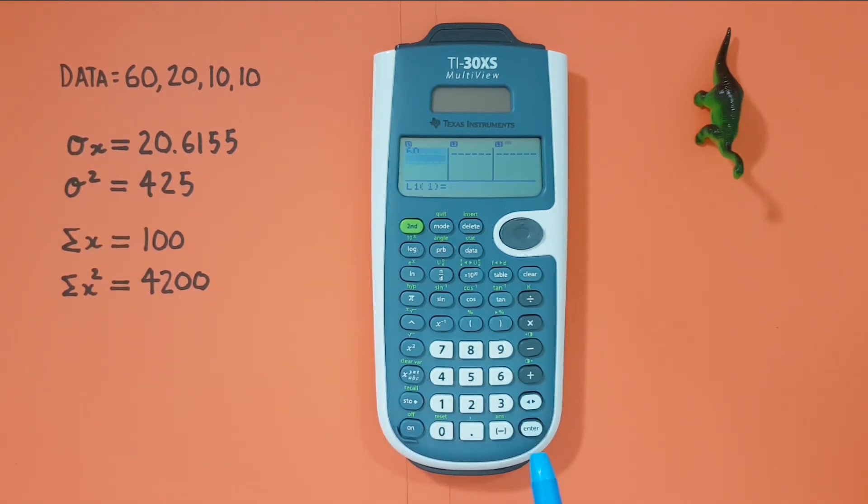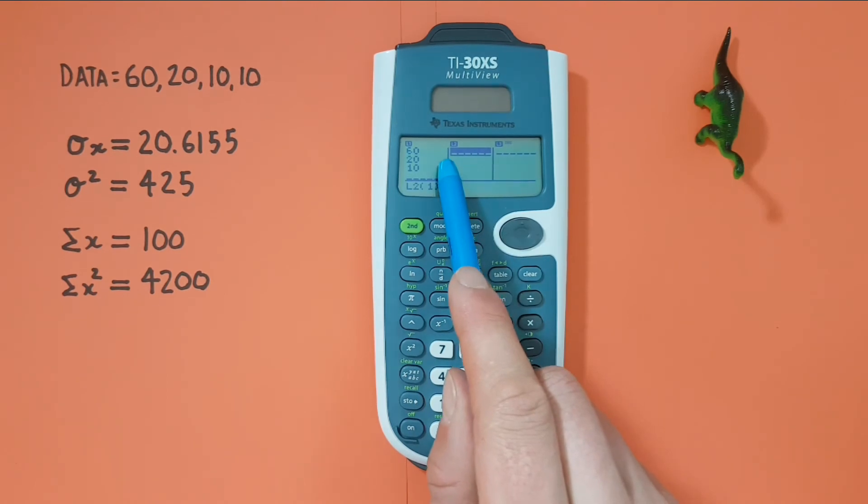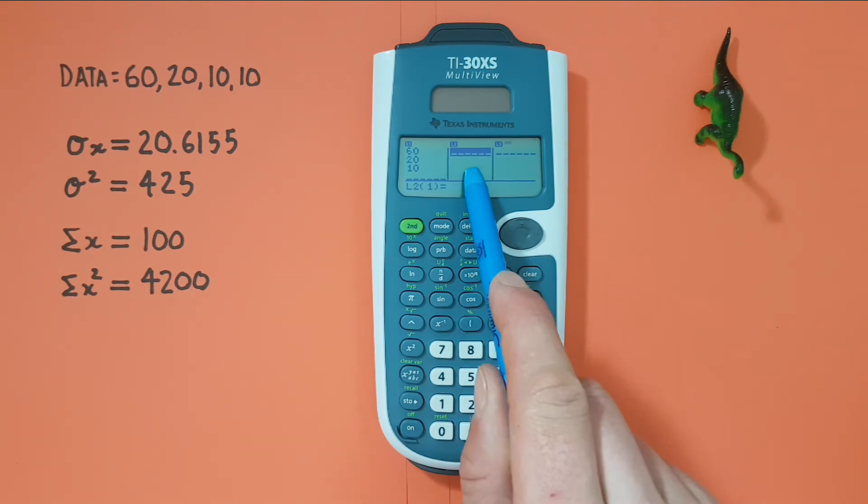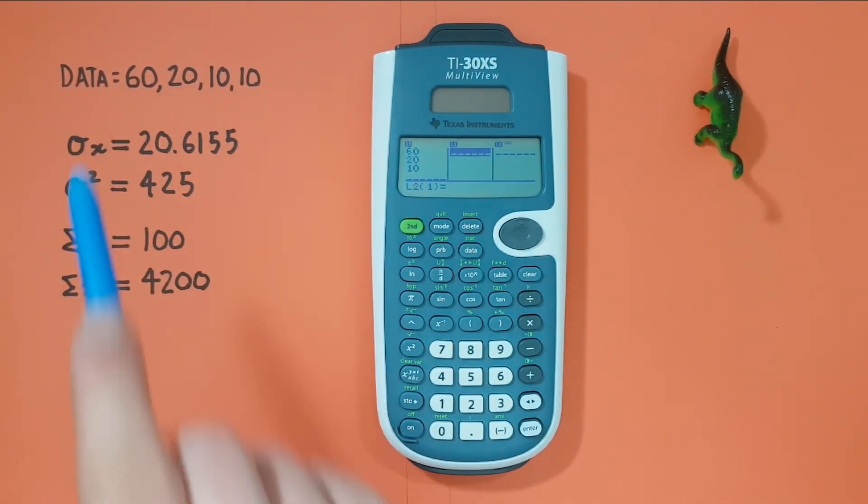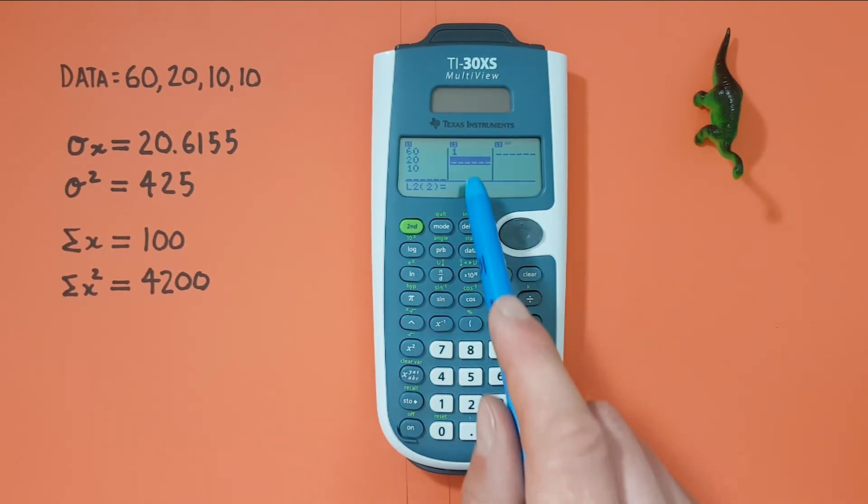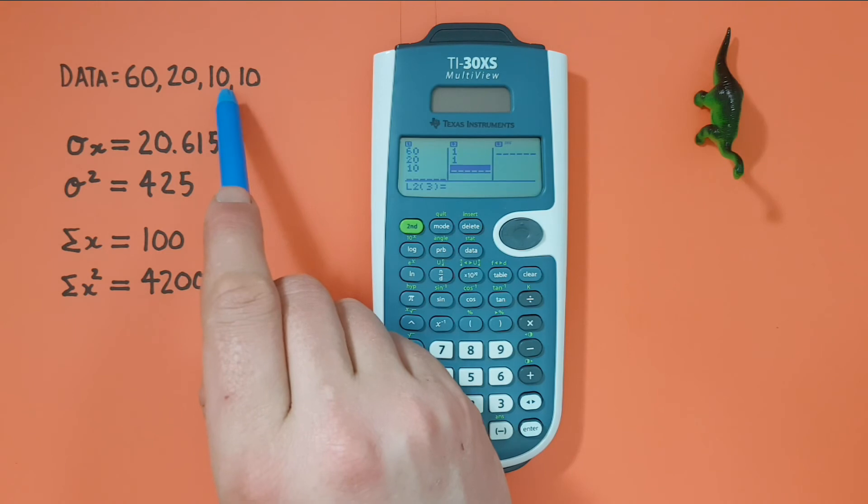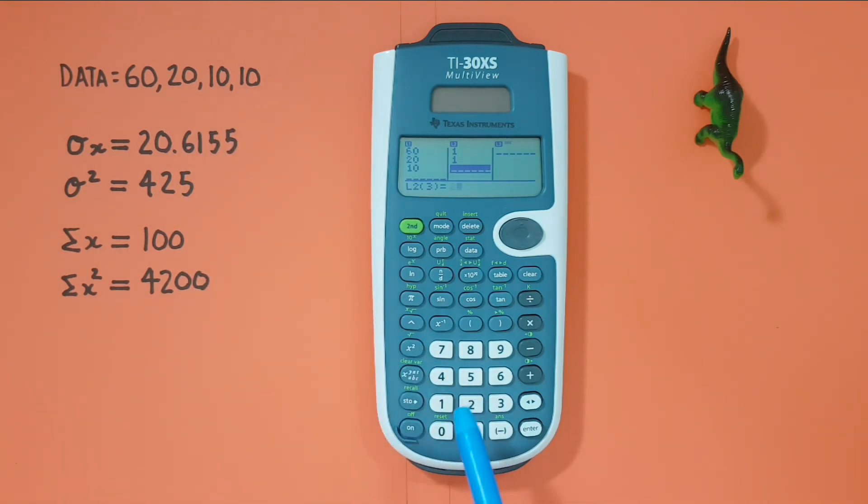We can start entering our data. So 60, enter. 20, enter. And 10, enter. There's all our unique values. Next if we scroll to the right one into list2, we can enter our frequency, or the number of times each variable occurs. So 60 occurs once, so we press 1 and enter. The 20 occurs once, so again we press 1, enter. And we see the 10, which occurs twice, so we enter that as a 2 and enter. Now we can clear out of this again.